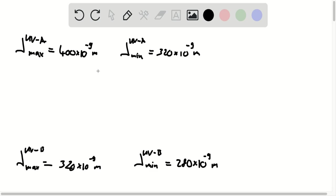So first we're given that UVA light or UVA electromagnetic waves have a maximum wavelength of 400 nanometers and a minimum wavelength of 320 nanometers and we're asked to find what the frequencies of UVA light can be.